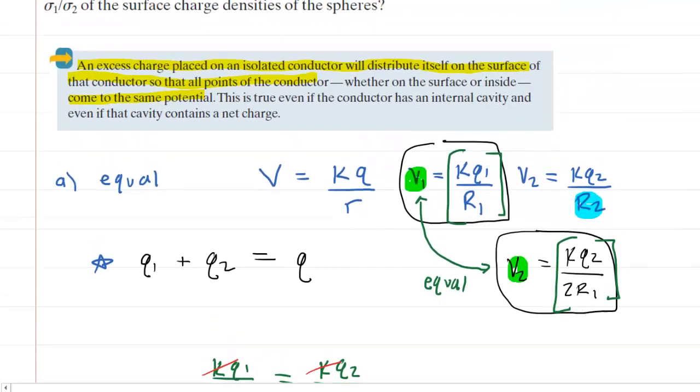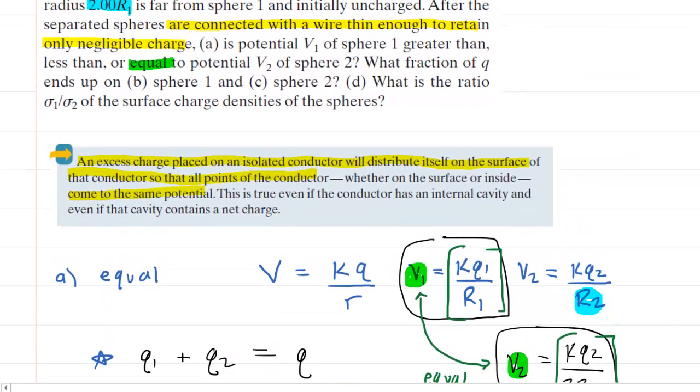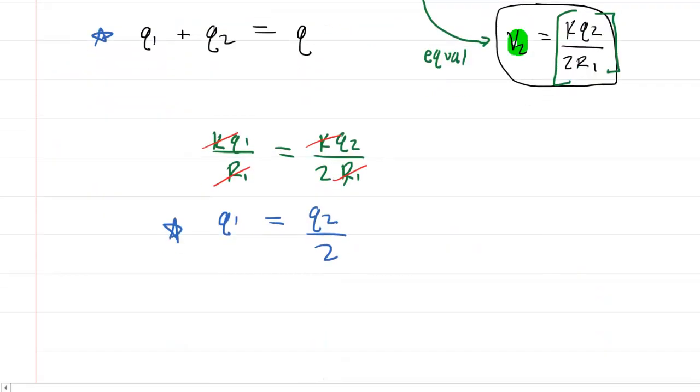Let's go back and figure out what we wanted in part B. It said, what fraction of Q ends up on sphere one? So what they're really asking for in part B is Q1 divided by Q. That's the nature of the question in part B, the fraction of the charge that's on sphere one.